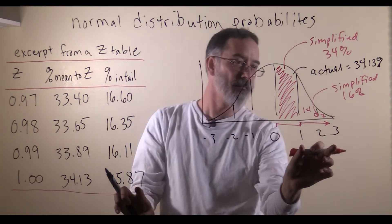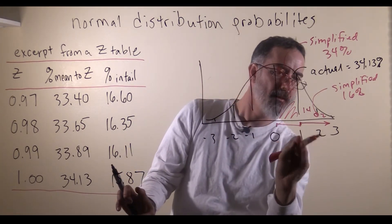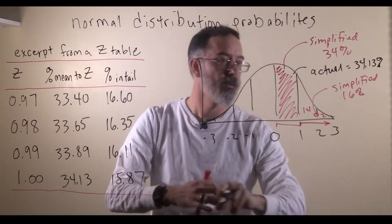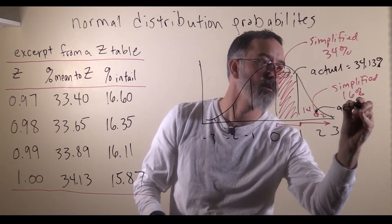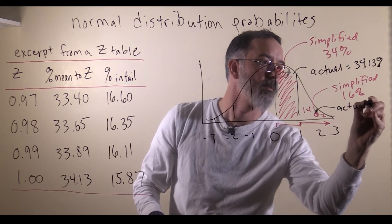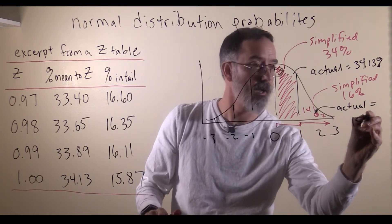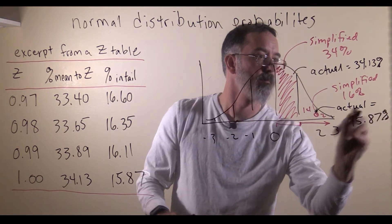So we have 1, so 15.87% of this distribution is beyond the 1. So the actual percent is 15.87%.